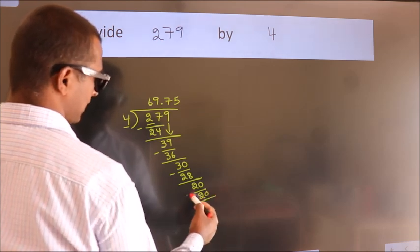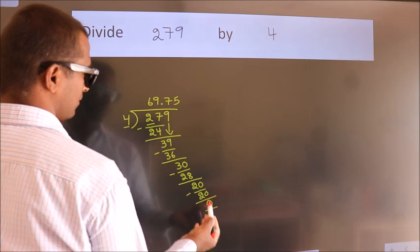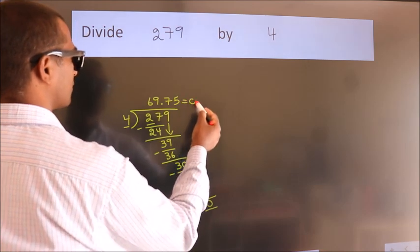Now we subtract. We get 0. We got remainder 0. So this is our quotient. Thank you.